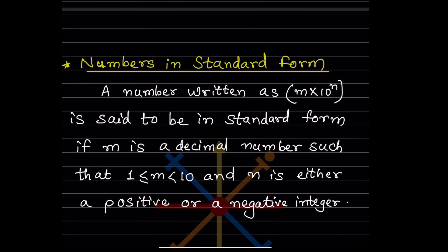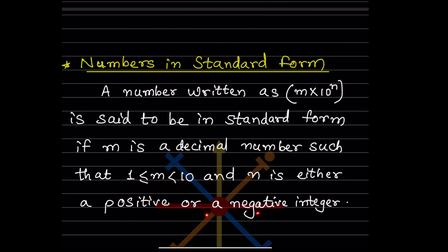First, let us see how to find the standard form. A number written in the form m × 10^n is said to be in standard form if m is a decimal number such that 1 ≤ m < 10, meaning m is greater than or equal to 1 but less than 10. And n is either a positive or a negative integer. When you do the problems, this will be more clear.